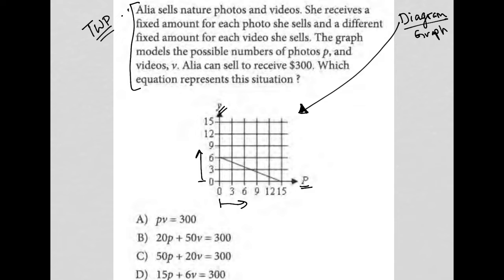Let me just stop there to make sure I understand. If I follow this graph, it looks like I have a point here, which would say if she sells 6 videos, it's the v-axis actually here, she sells 6 videos and 0 photos, she'll make $300. And way over here, if she sells 15 photos and 0 videos, she'll also make $300. That's how I understand that. And then there's plenty of points in between as well.